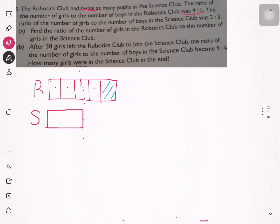Two and a half units of the robotics club will be equivalent to one unit of the science club, in terms of number of pupils. So for the science club, the ratio of girls to boys is 2:3.